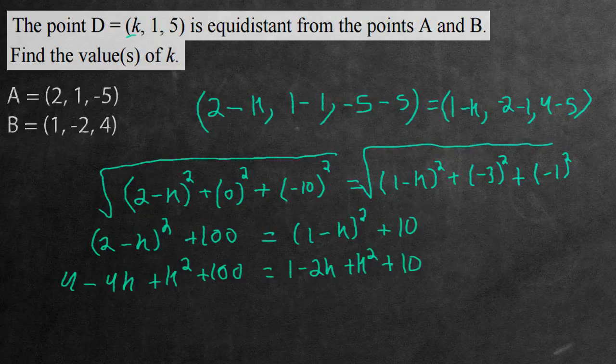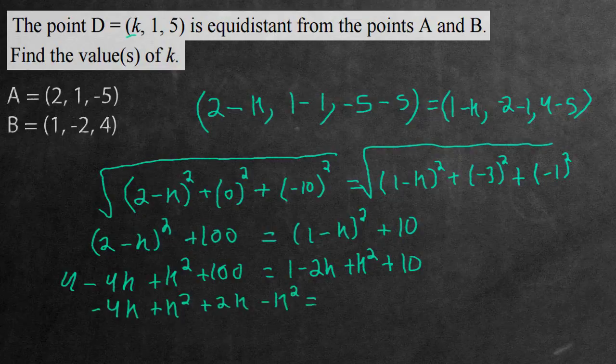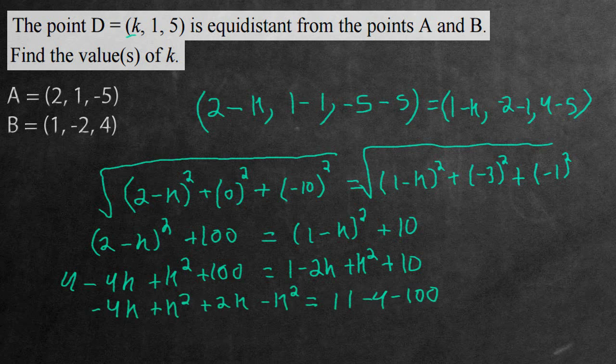Let's put all of the K variables onto the left-hand side, and all the constants to the right-hand side. We'd get negative 4K plus K squared plus 2K minus K squared equals 11 subtract 4 minus 100. Simplifying this, we have positive K squared and negative K squared cancel out, so negative 4K plus 2K is negative 2K overall, equals negative 93.